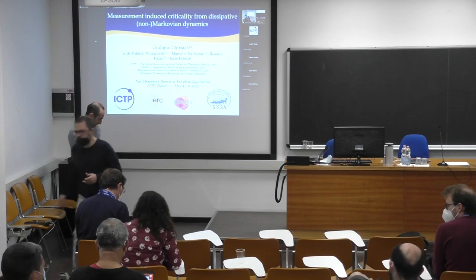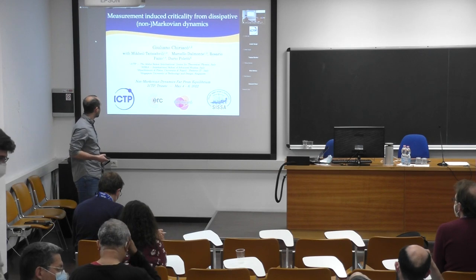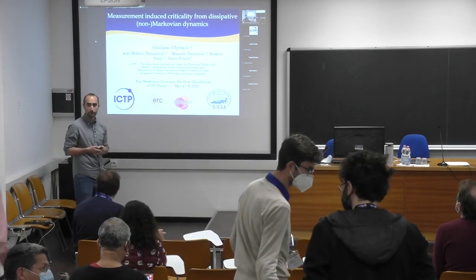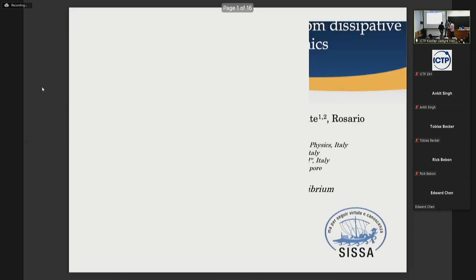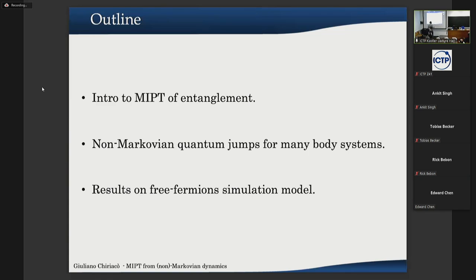This work was done in collaboration with Mikhail Cicicvili, Marcello Del Monte, Rosario Fazio, and Dario Poletti. To give an outline: I will first present a brief introduction of measurement-induced transitions for entanglement in various systems, and then I will briefly talk about non-Markovian quantum jumps for many-body systems.